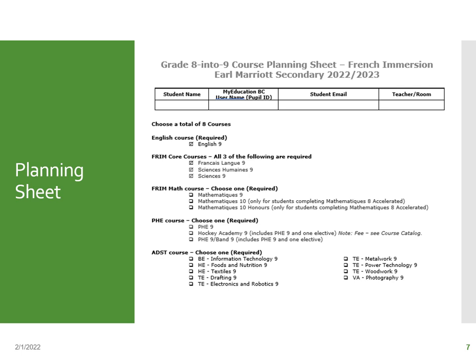Now here's the French Immersion version of the course selection sheet. It's very similar to the English version, except the courses listed are in French. English 9 has been checked off for everyone. There are three core French Immersion classes everyone must take — also already checked off — which are your FRAL, your Socials, and your Science.